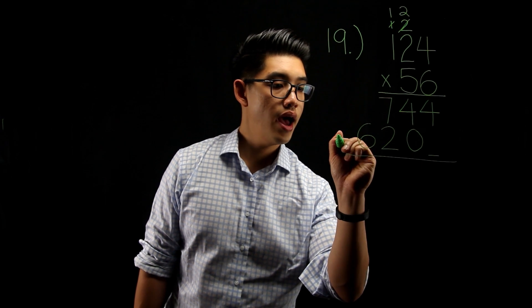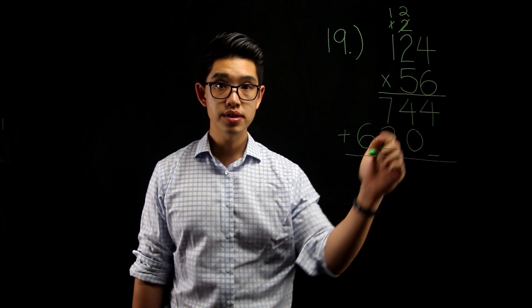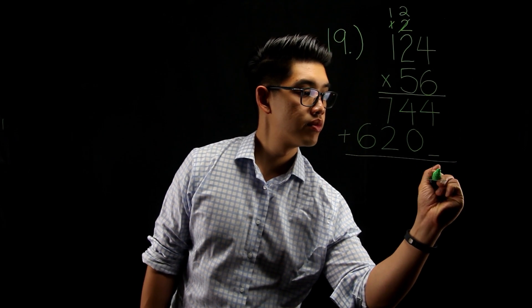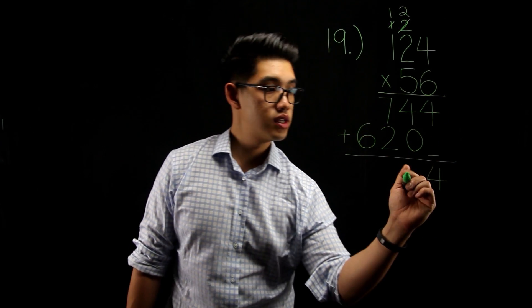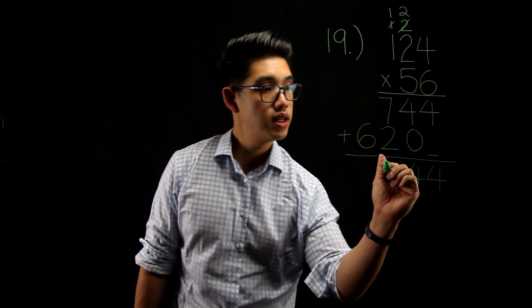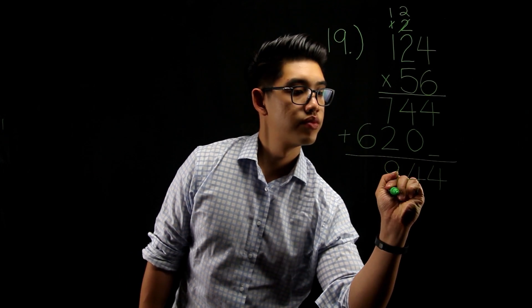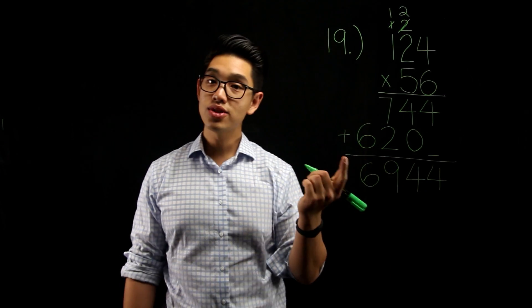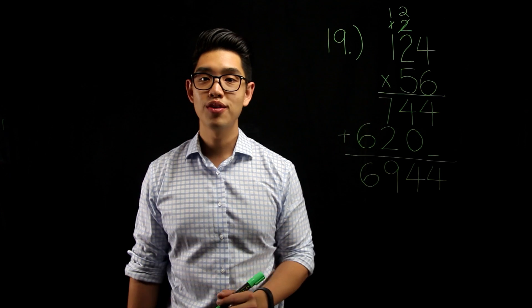I'm then going to add up these two numbers. 4 plus nothing, or 0, it's just going to be 4. 4 plus 0 is 4 again. 7 plus 2, that's going to be 9. And 6, just drop it down. So, your answer is going to be 6,944.